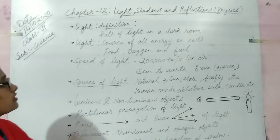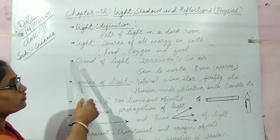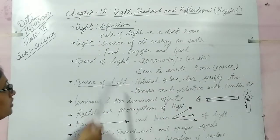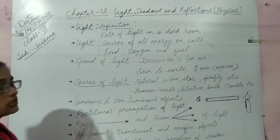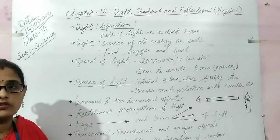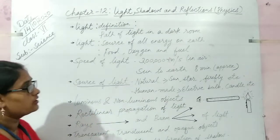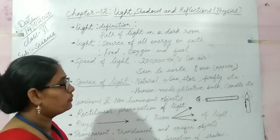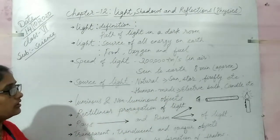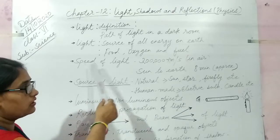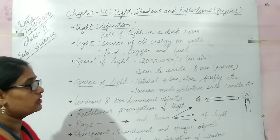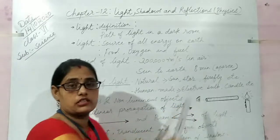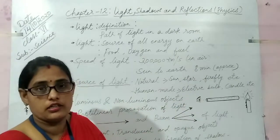Light is the base and source of all the energy available on the earth. Let's discuss the speed of light. The speed of light is 3 lakh kilometers per second in air. From the sun to the earth, light takes approximately 8 minutes to reach.